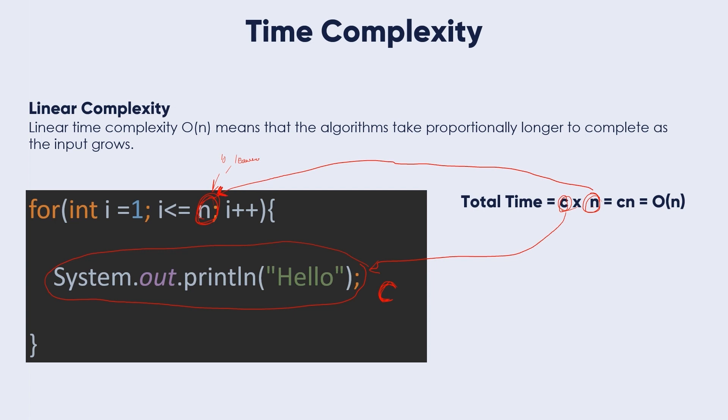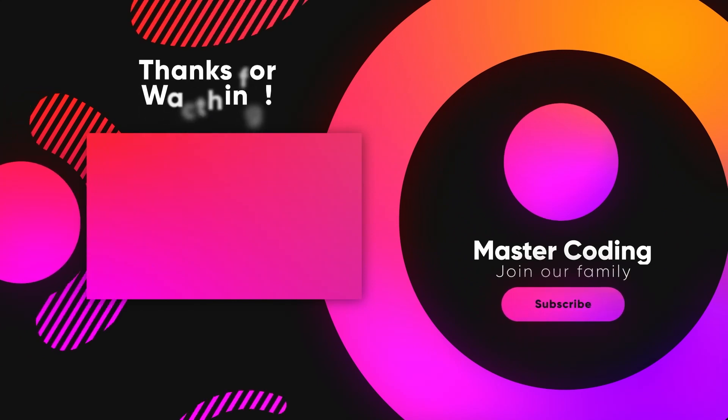This is c times n equals cn. And according to the previous lessons that we have seen, that the higher value of n, we took it and we removed the constant that it is multiplied by n. Here in this equation, we have the highest term. It is cn, n having power 1. And the multiplied constant with n is removed. We have, therefore, the O of n is the time complexity for this loop.